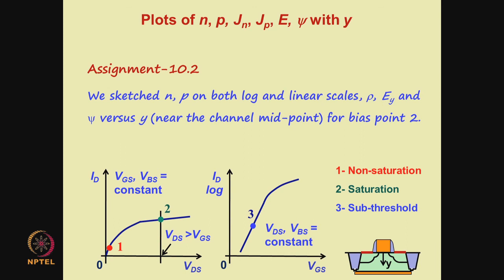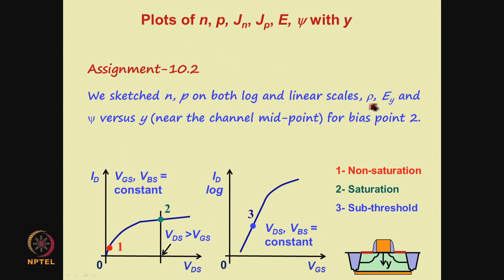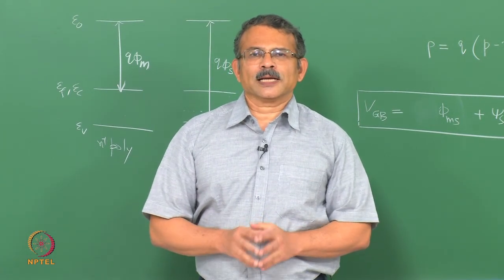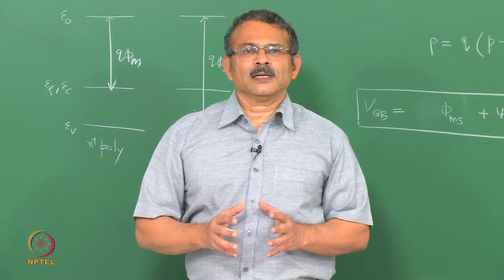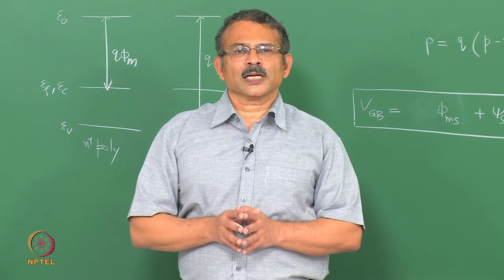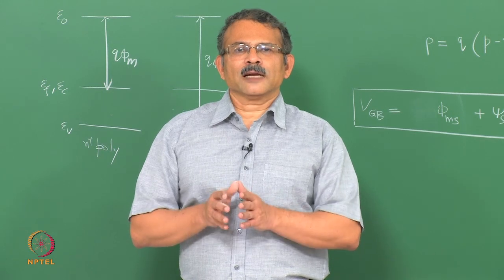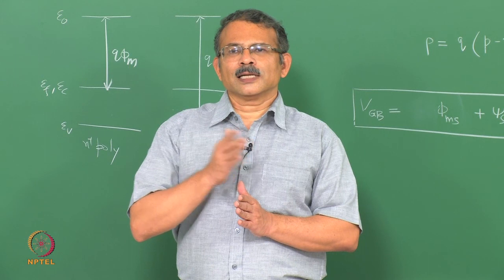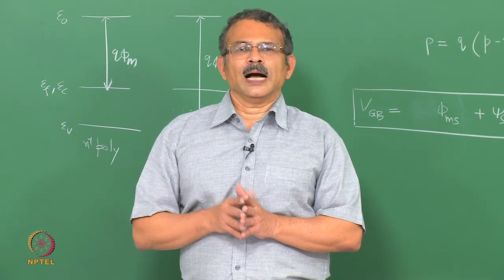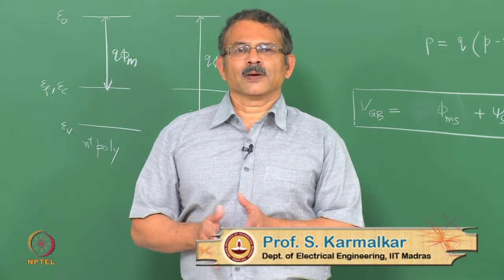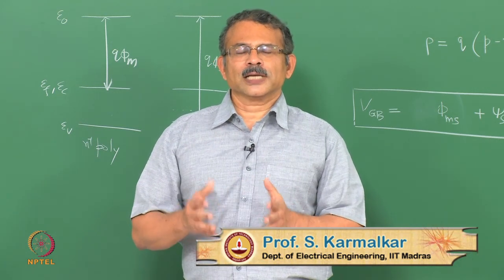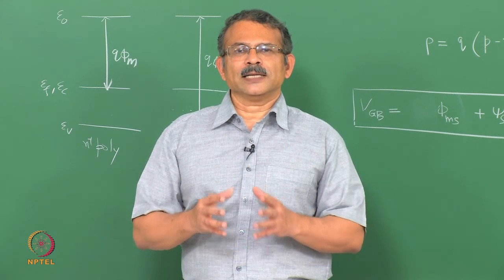Here is an assignment: we sketched n, p on both log and linear scales, rho, E_y, and psi versus y near the channel midpoint for bias point 2 (saturation). Now repeat this exercise for bias point 3, which is the subthreshold point. In this lecture, we have sketched the electron concentration, hole concentration, space charge, electric field directed from the silicon dioxide interface into the bulk perpendicular to the interface, and the potential in the perpendicular direction near the channel midpoint. In the next lecture, we shall discuss the variation of the energy bands in the same direction.